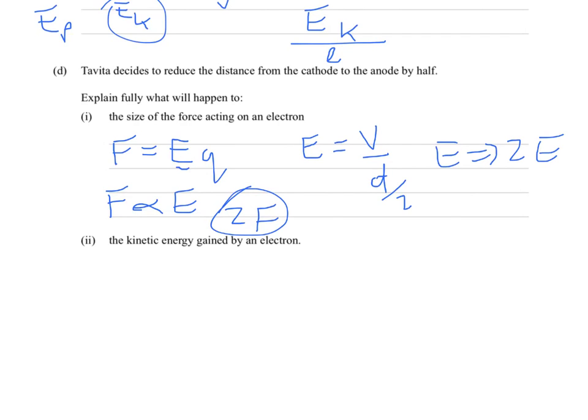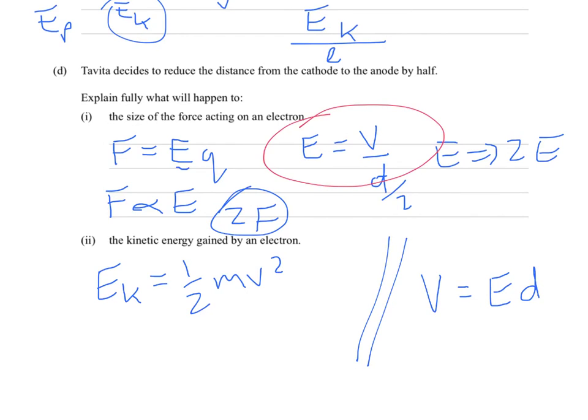Part 2, the kinetic energy gained by an electron. The kinetic energy is half mv squared. So the mass of the electron obviously doesn't change. So we've got to consider if that velocity will change. We could look at our calculation from the voltage above to see whether it will gain more energy also. So remember that the voltage is related to the electric field strength by electric field strength times by the distance, coming from our equation up here above. Electric field strength is volts per meter, voltage over distance. So we've rearranged that.